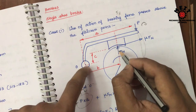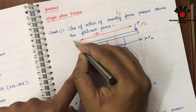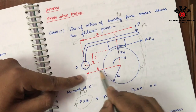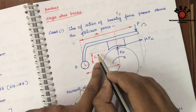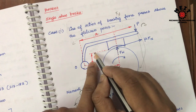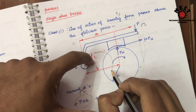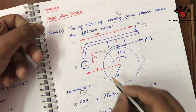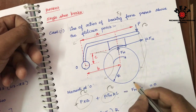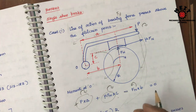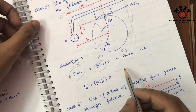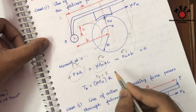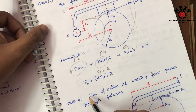Then F1 about the fulcrum point will make anti-clockwise, so minus F1 into distance B. The frictional force on the right side will generate a clockwise moment — plus mu into F1 into distance C. So this is the moment equation. And then the braking torque Tb equals frictional force into the radius of the drum. That is the braking torque.